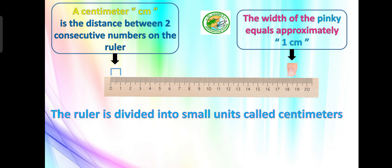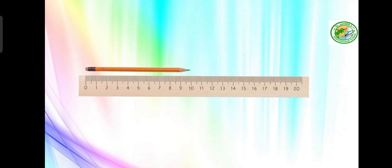The width of the pinky finger equals approximately one centimeter. This is how you can imagine the size of one centimeter — it is a small unit, about the width of your pinky finger.